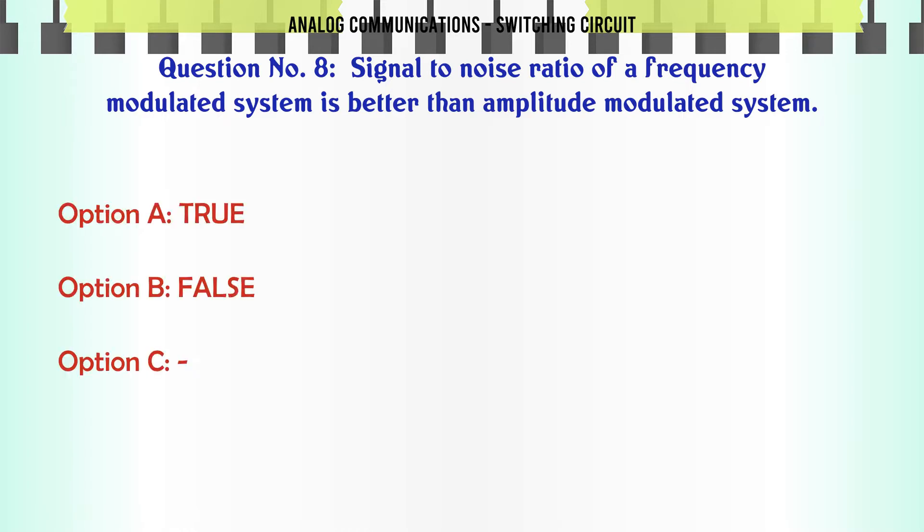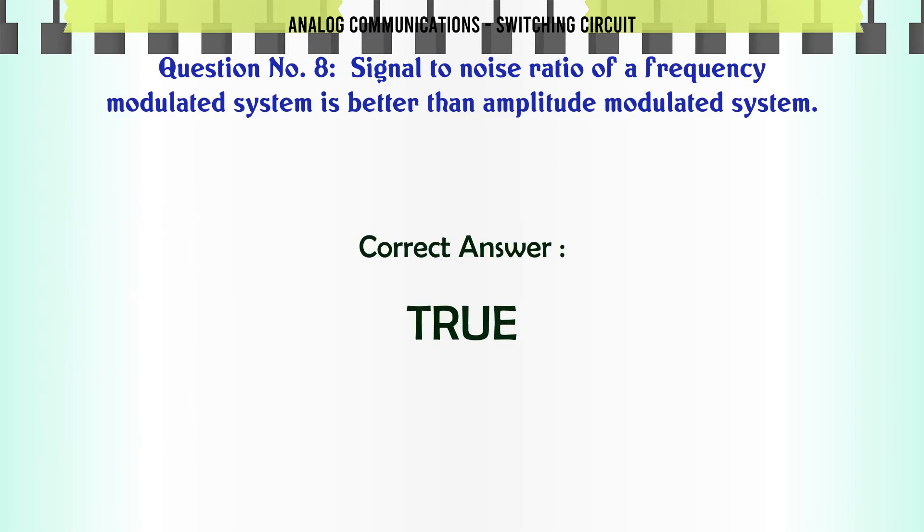Question: Signal to noise ratio of a frequency modulated system is better than amplitude modulated system. Option A: True. Option B: False. The correct answer is True.